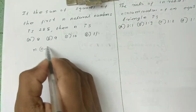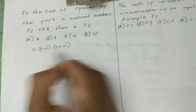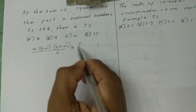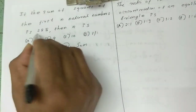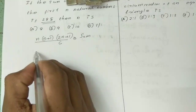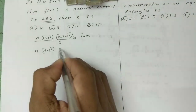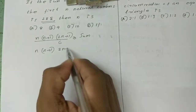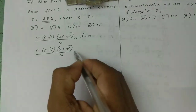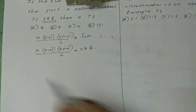The sum of squares of natural numbers is given by the formula N(N+1)(2N+1) divided by 6, which equals the sum. So we set N(N+1)(2N+1) divided by 6 equal to 285.